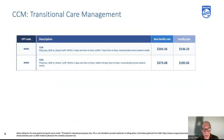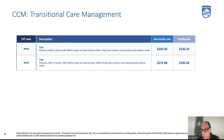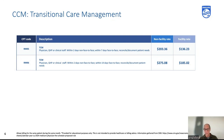Here are your transitional care management codes, with 2024 rates. For 99495, for example, you see physician, QHP, or clinical staff options. It's really up to the physician — you can talk to the patient, have clinical staff do it, or mix and match. There are also codes for first 20 minutes and second 20 minutes, allowing flexibility and provider choice.